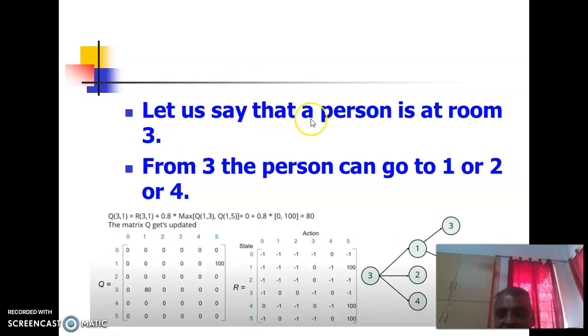Now let us say that the person is at room number 3. From 3 the person can go to number 1 or 2 or 4, let us select randomly the person is going to 1.